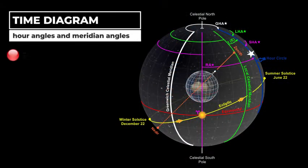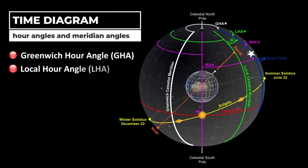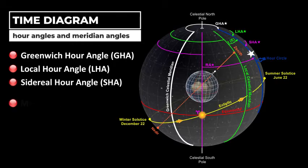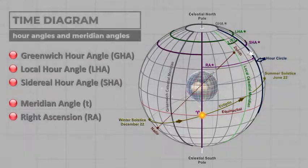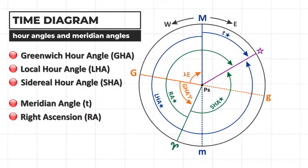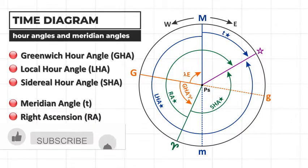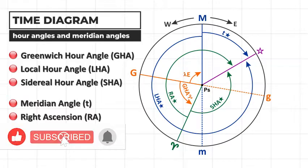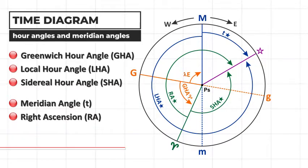Angles required for celestial navigation calculations can be difficult to establish on a flat representation of a 3D sphere. The Time Diagram is a convenient alternative when illustrating the relationship between various angles on the celestial sphere as viewed from an imaginary point beyond the celestial south pole.